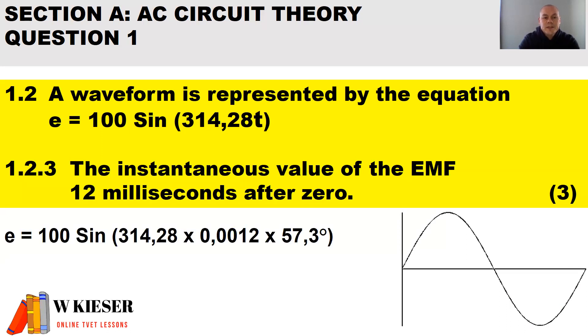Don't forget: to convert milliseconds to seconds, we divide by 1,000, and to convert radians to degrees, we multiply by 57.3. Therefore, the instantaneous value at 12 milliseconds will be minus 58.9 volts.